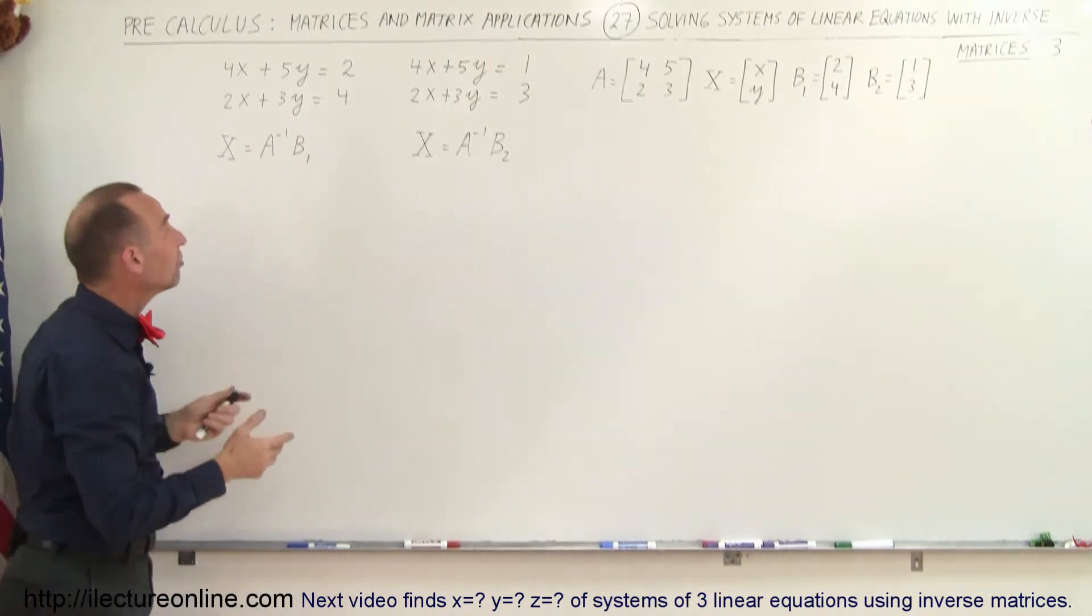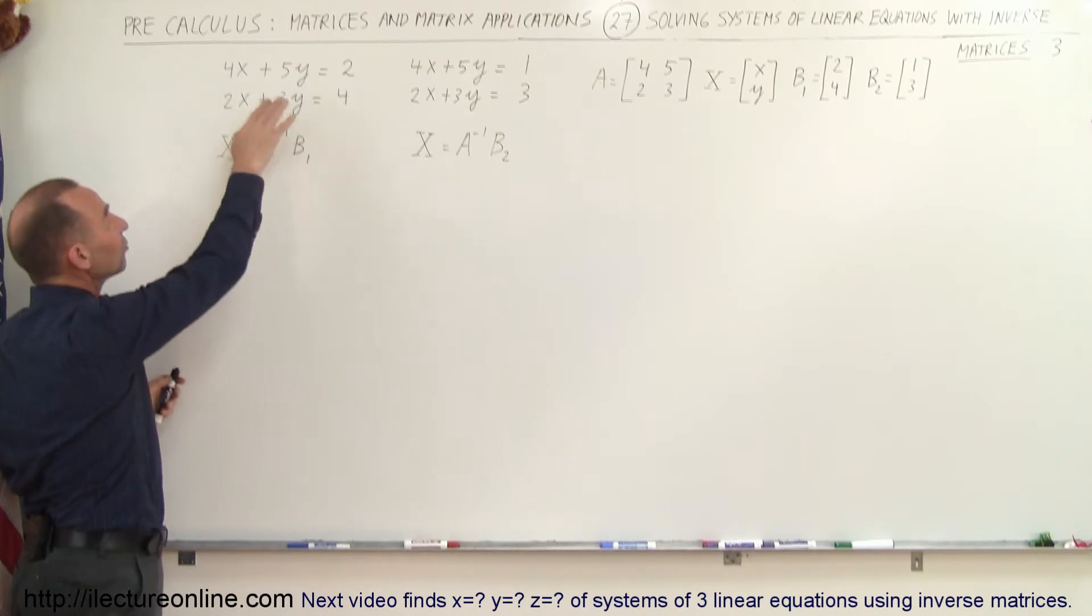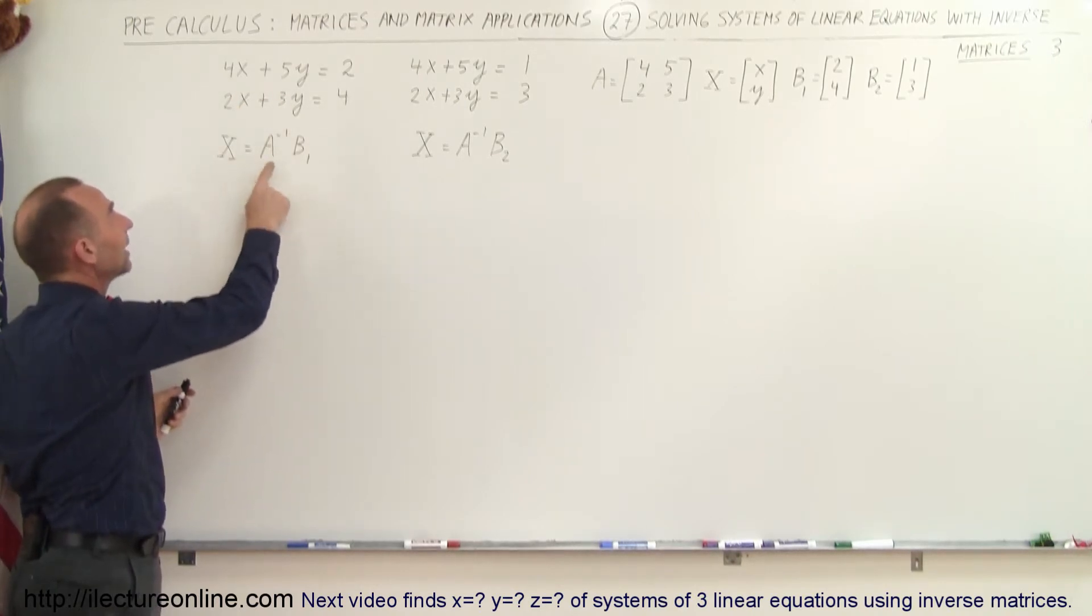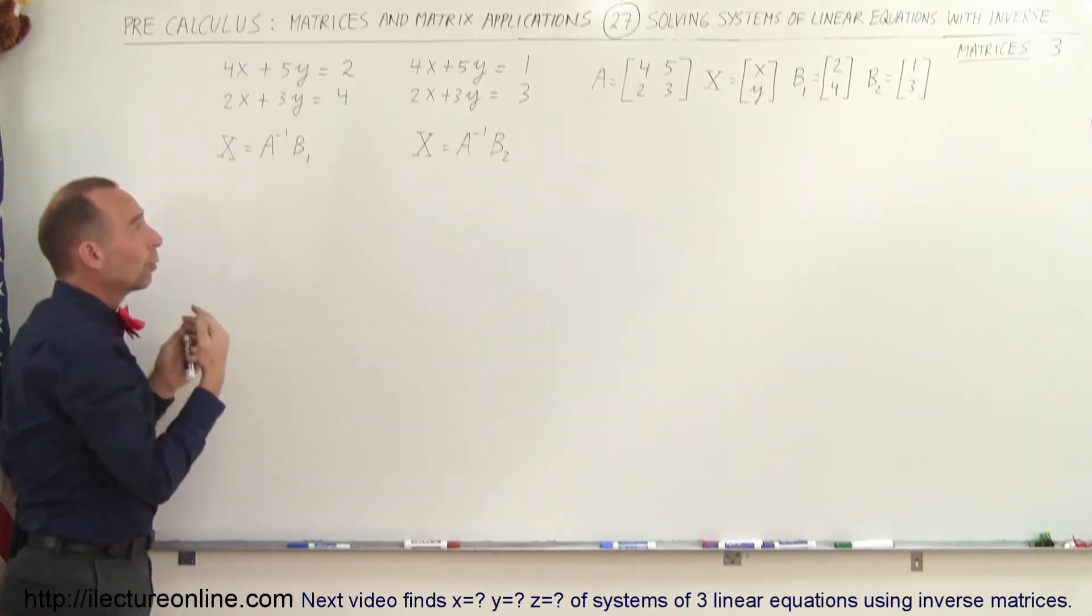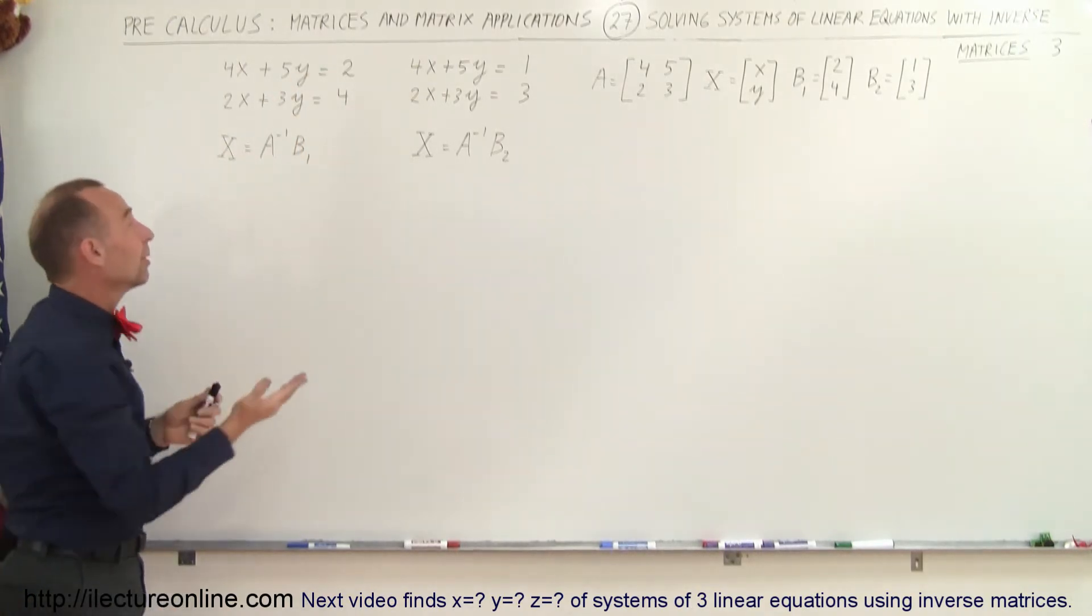Which means that in each case I can find out the values for x and y in each system of linear equations by taking the inverse of A and multiplying times the B matrix.